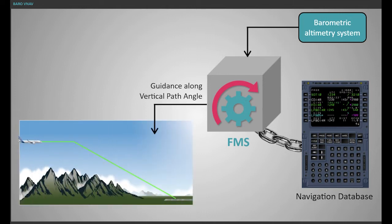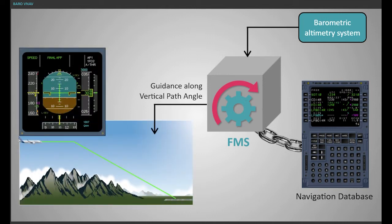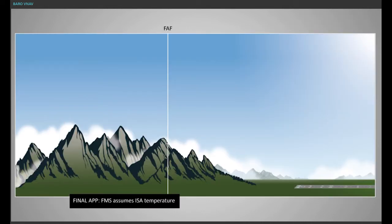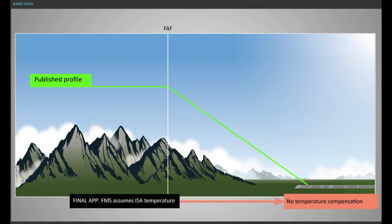Guiding the aircraft along this vertical path angle is called Barrow VNAV. To compute the barometric indicated altitude, the FMS assumes ISA temperature for all barometric altimeter-related data processing.